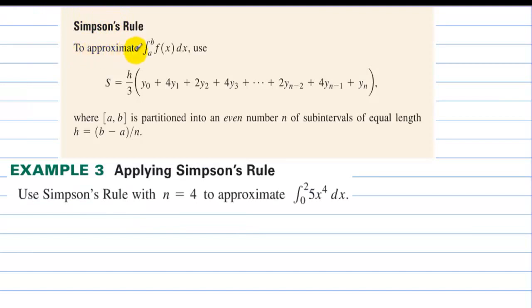Simpson's rule. To approximate the area under the curve, use Simpson's rule is now h over 3 instead of h over 2. And then we take the first side, plus 4 times an x, plus 2 times an x, plus 4, and then it alternates 4, 2, 4, 2, 4, 2. And then the last one is just 1, where [a, b] is partitioned into an even number n of subintervals of equal length.